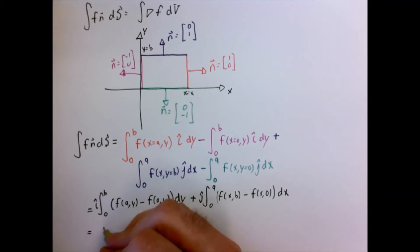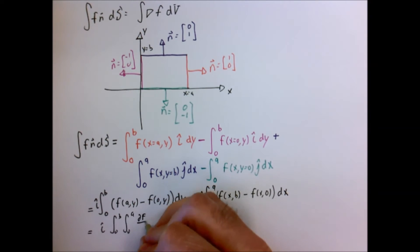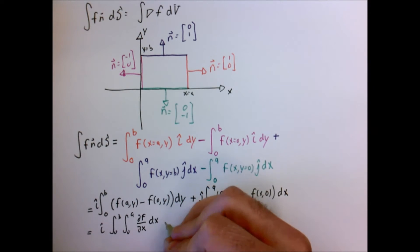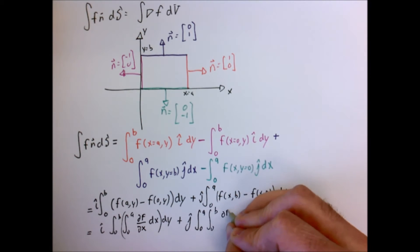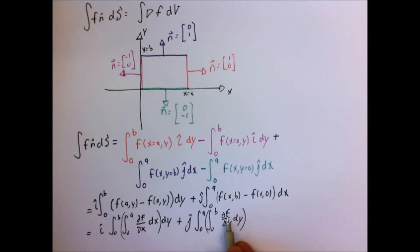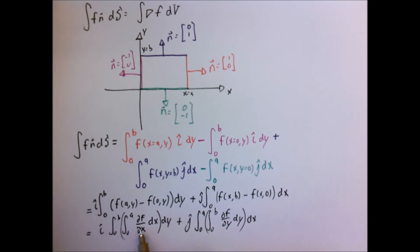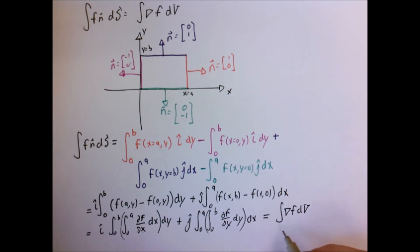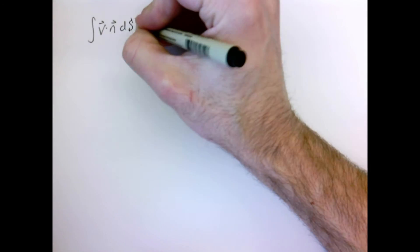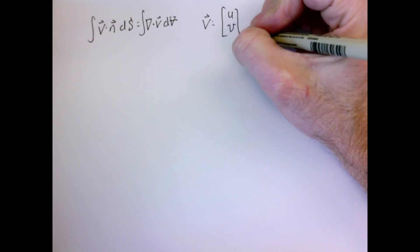Now if I use the fundamental theorem of calculus, f evaluated at a minus f evaluated at 0 is the same as the derivative of f with respect to x, integrated over x from 0 to a. Likewise, the y terms become the derivative of f with respect to y, integrated with respect to y. I now have two integrals with respect to x and y. Since the order of integration doesn't matter, I've got the derivative of f with respect to x times i-hat plus derivative of f with respect to y times j-hat — that becomes the gradient, exactly what we set out to prove.